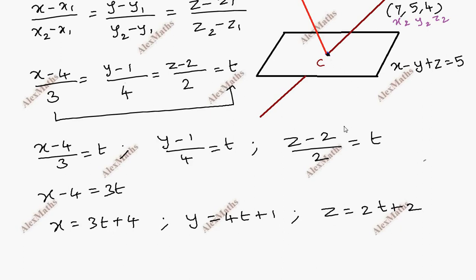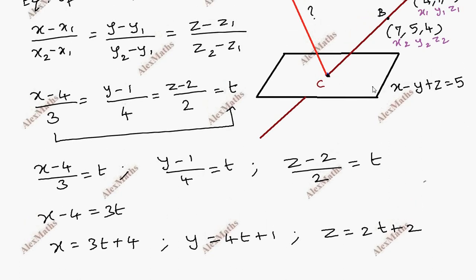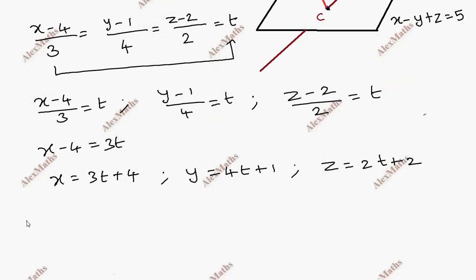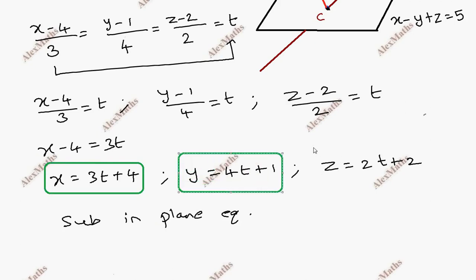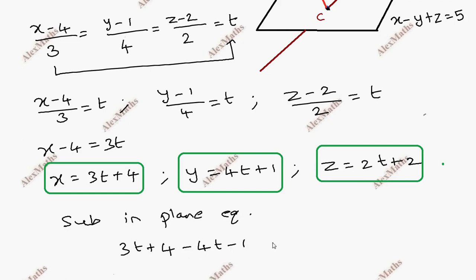The general point C depends upon the value of t. Since point C lies on the plane, we substitute x, y, z into the plane equation x minus y plus z equals 5. Substituting: (3t plus 4) minus (4t plus 1) plus (2t plus 2) equals 5.